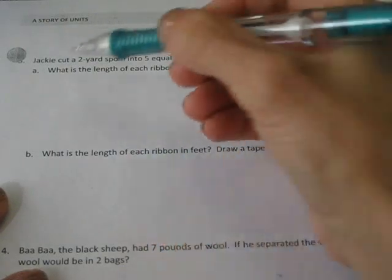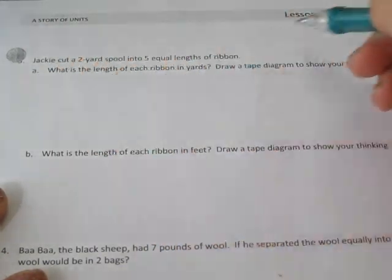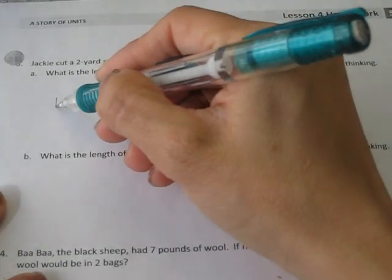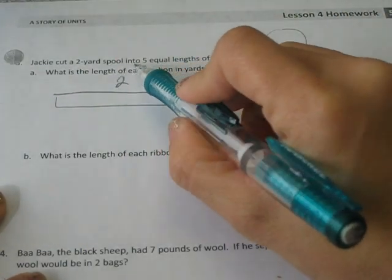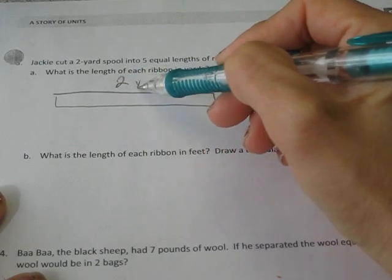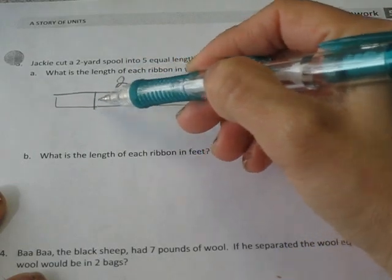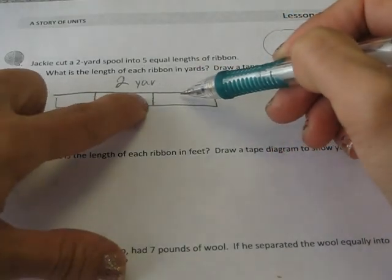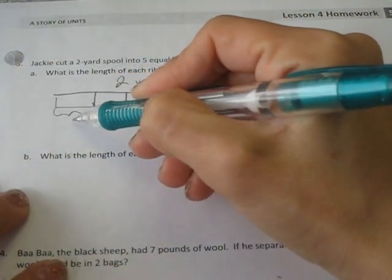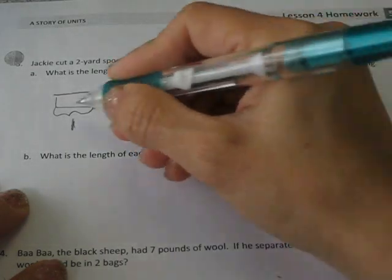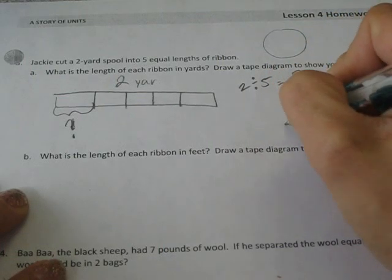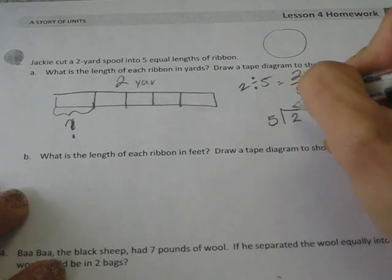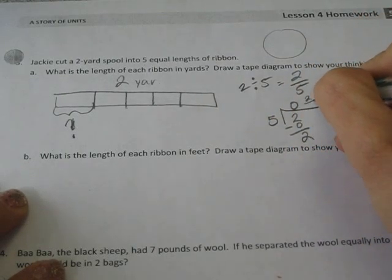For number 3, Jackie cut a 2 yard spool into 5 equal lengths of ribbon. So a spool is just a circular thing that holds ribbon going all the way around. So if this spool is 2 yards and it holds 5 equal lengths of ribbon, we have 2 yards, 1, 2, 3, 4, 5. What is the length of each ribbon in yards? 1, 2, 3, 4, 5. It wants to know how much 1 would be. So that would be 2 divided by 5, which is 2 fifths. Or we can show it this way. 2 divided by 5, which is 2 fifths.